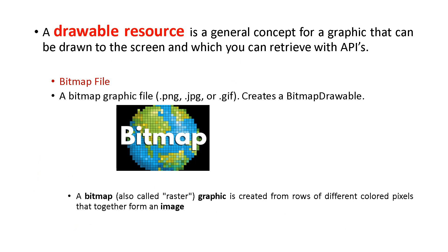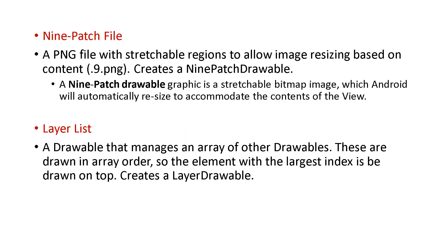Next are drawable resources. A drawable is a general concept for a graphic that can be drawn to the screen and retrieved with APIs. The first type is a bitmap file, with extension .png, .jpg, or .gif — graphics created from rows of different colored pixels that together form an image. The second type is a 9-patch file with extension .9.png — this is a stretchable bitmap image in which Android automatically resizes it to accommodate the contents of the view.